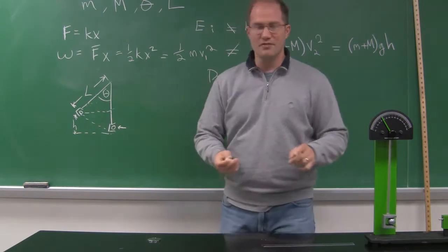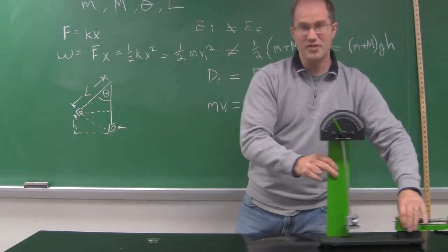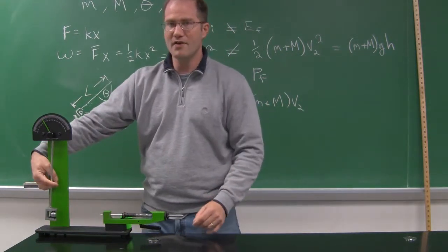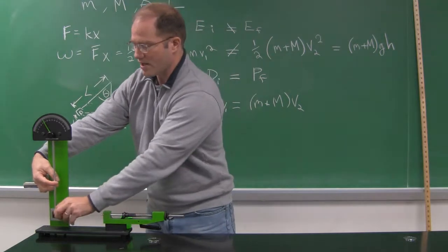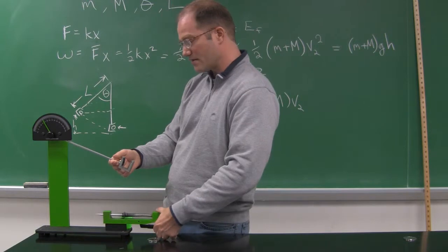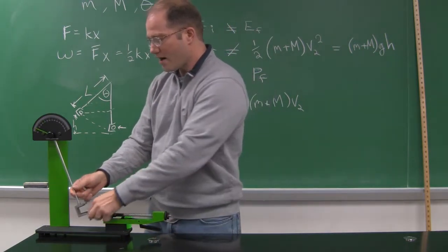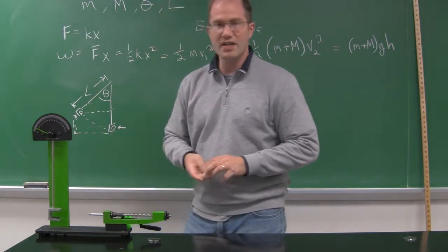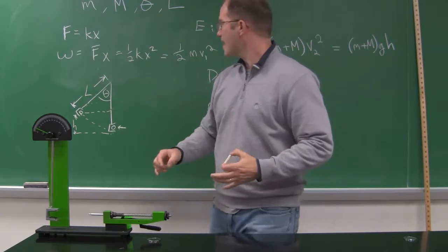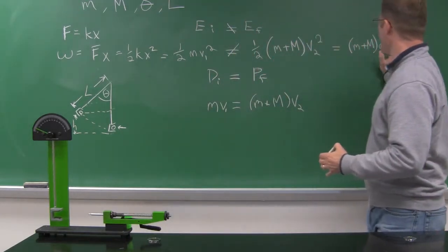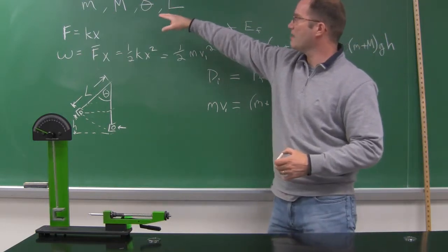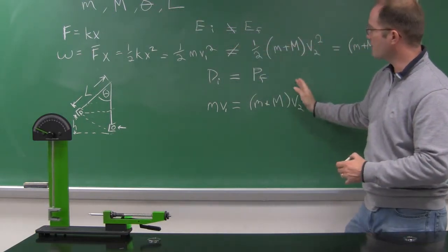One thing you might want to do is determine the range of a projectile. If the cup were out of the way and I just fired the ball straight across onto the floor, how far would it go? I need to know the initial horizontal velocity of the ball. By knowing theta, L, big M, and little m, I can calculate through the chain of equations — from pendulum angle to height to energy to momentum — and once I get V₁, that's the velocity of the ball before the collision.